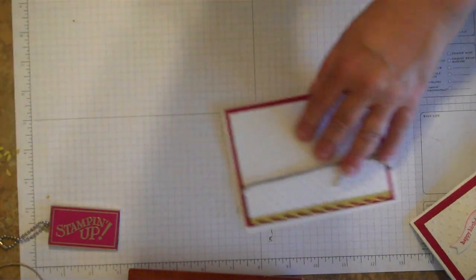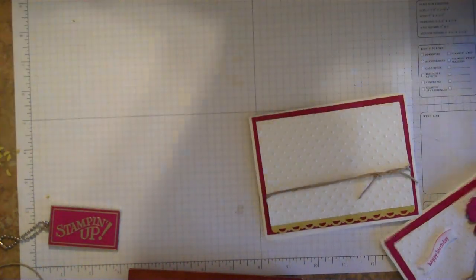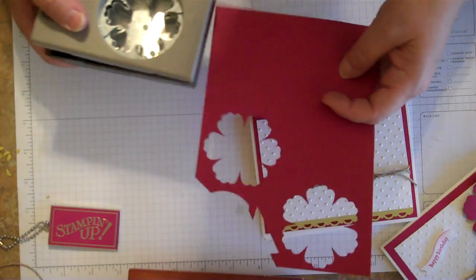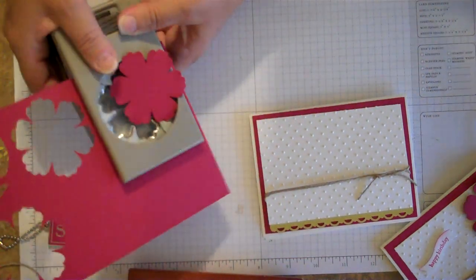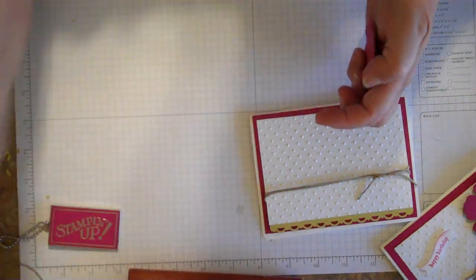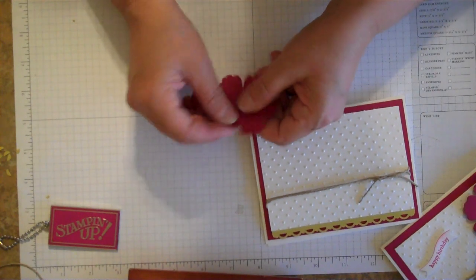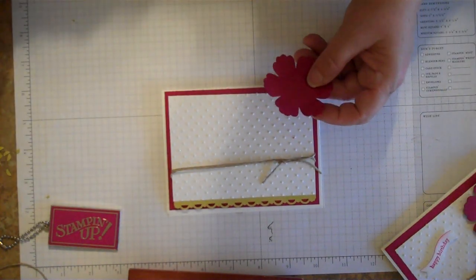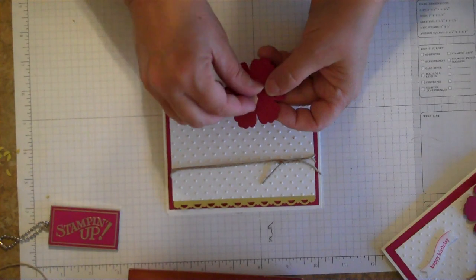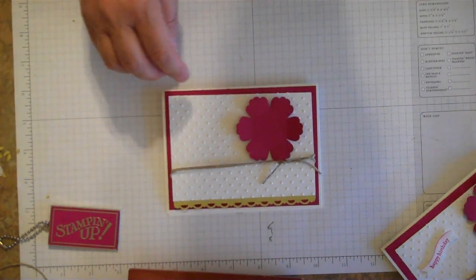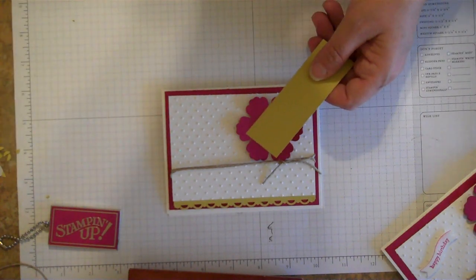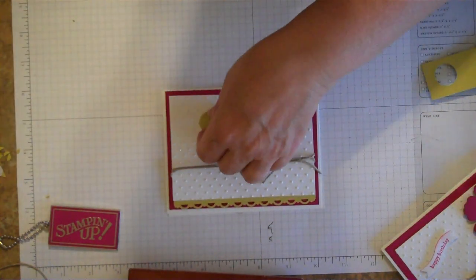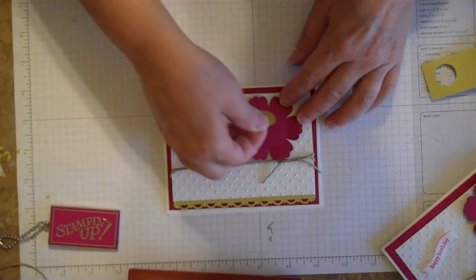So the next part of the card, we're going to be using another punch and this is the blossom punch. I'm just going to be punching out one of my blossoms on the raspberry ripple to match the second layer of our card. Just going to kind of gently pull up the sides here just to give it a little bit more dimension. I'll be attaching this with a dimensional. And then for our center of our flower I'm using the summer star fruit with a 3-quarter inch punch and we'll use another dimensional on the back of this and set that right in the center.